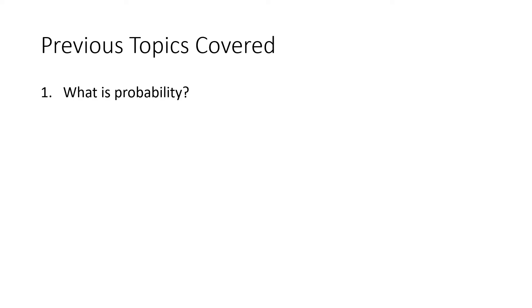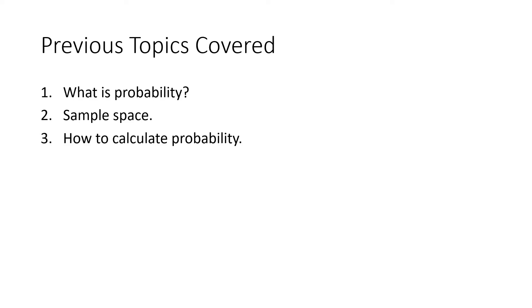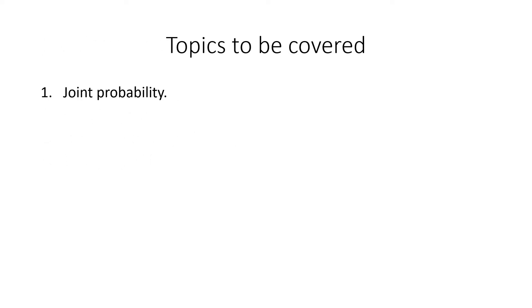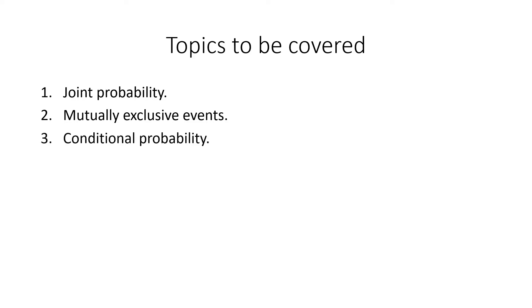Just a reminder — the previous topics we covered in the last session were: what is probability, sample space, how to calculate probability, and some examples. Today we will be covering joint probability, mutually exclusive events, and conditional probability. These are the three focus areas, and we will also work through problems and examples covering all three.